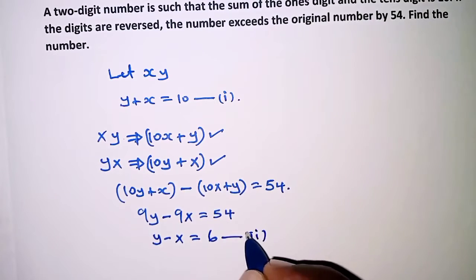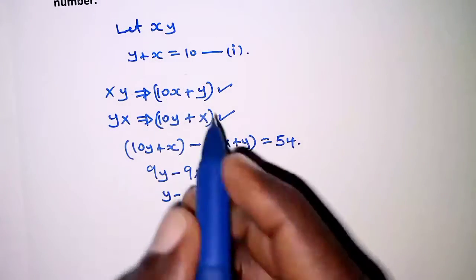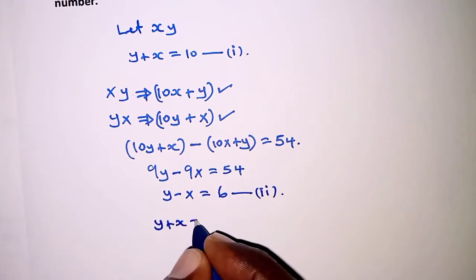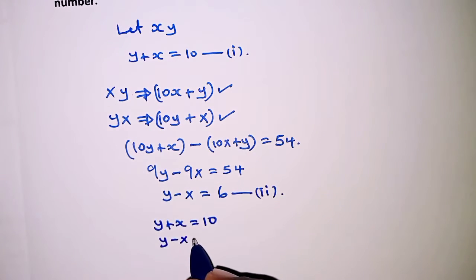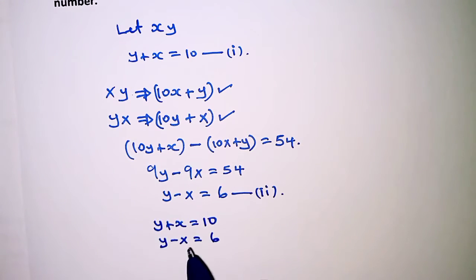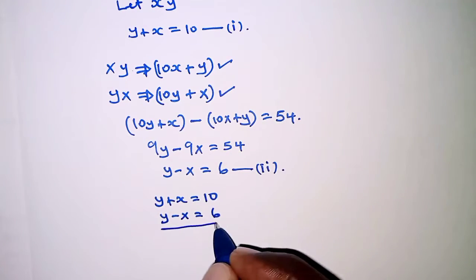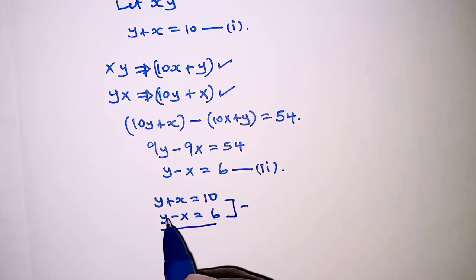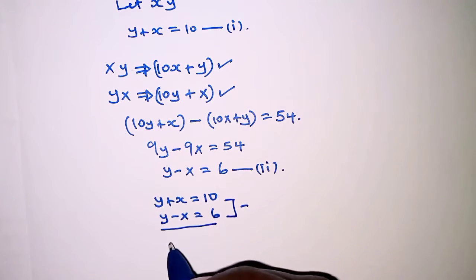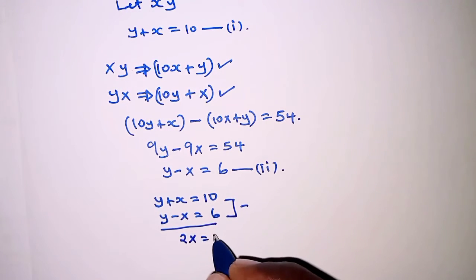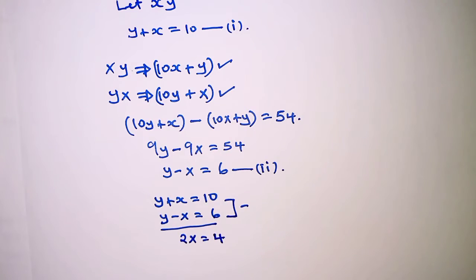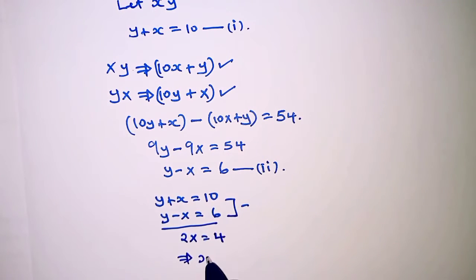So we have the first equation: Y plus X equals 10, and the second equation: Y minus X equals 6. Solving this simultaneously using the elimination method, when we subtract the second equation from the first, we get 2X equals 4, which implies X equals 2.